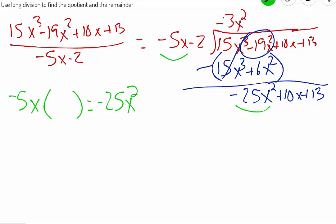Well, we have a negative 5. Negative 5 times 5 is negative 25. x times x gives us x squared. So I'm going to say that this is going to go in 5x times.